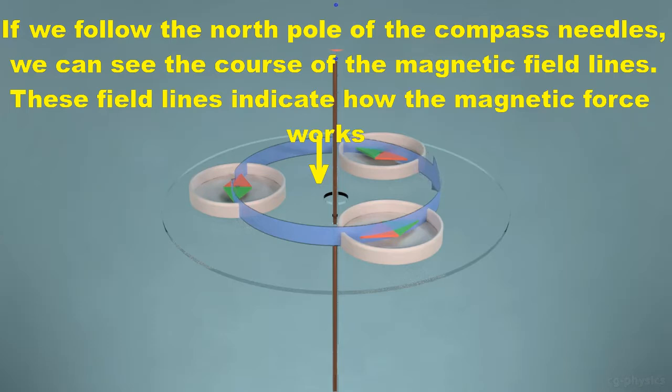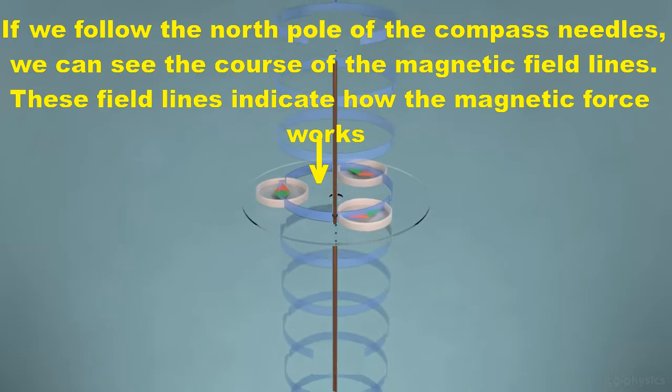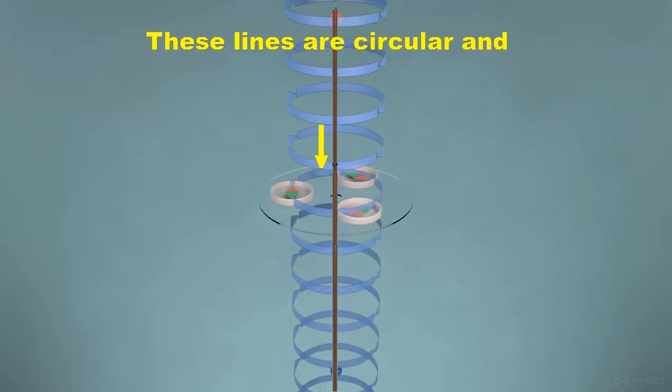These lines are circular and surround the entire wire.